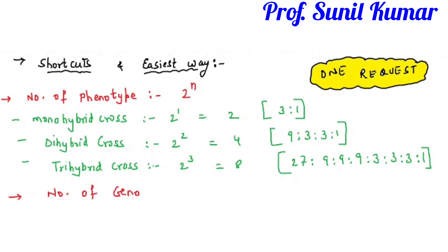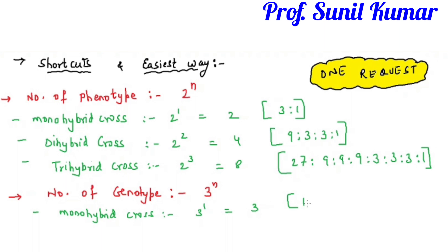When asked about the number of genotypes, write the formula 3 to the power n, where n is the number of crosses. For a monohybrid cross it is 3 to the power 1, giving 3 genotypes in the ratio 1:2:1. For a dihybrid cross it will be 3 to the power 2.